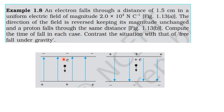The electron is in free fall under the electric field. The electric field is directed upward. The force on the electron acts in the opposite direction to the field, so the electron experiences a downward acceleration. In the second case, the electric field is reversed but has the same magnitude.